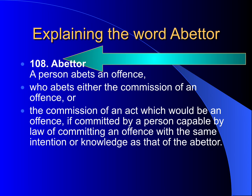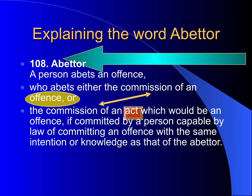Now coming to Section 108, which says the abettor is a person who abets an offence — who abets either the commission of an offence, or the commission of an act which would be an offence if committed by a person capable by law of committing an offence with the same intention or knowledge as that of the abettor. An offence having been committed or not committed is not relevant here. Further, if the act would have been committed and if it becomes an offence, even without committing the act, abetment is complete. The knowledge or intention of the person who actually commits the offence is not relevant with regard to the abettor.